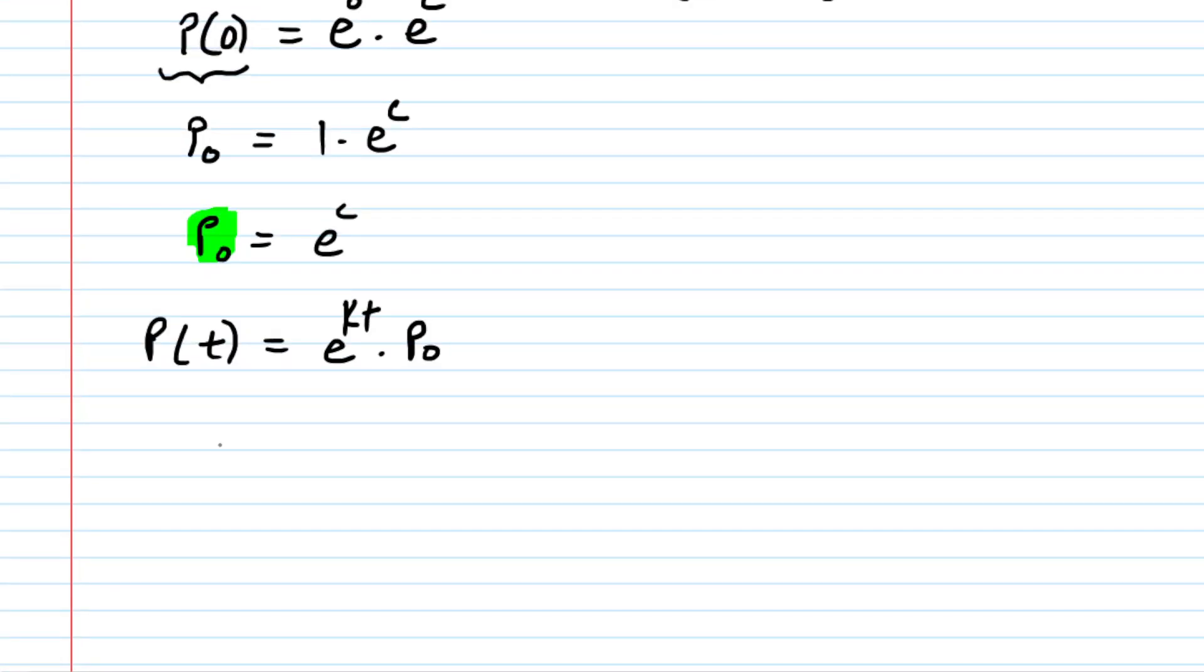So we went ahead and made that substitution. Let's just switch the order on the right-hand side so that we have P₀ times e^kt. And this is the final solution of the original differential equation.